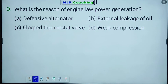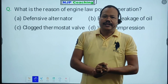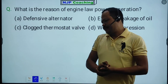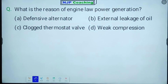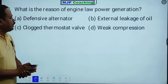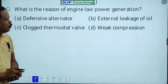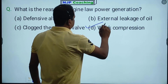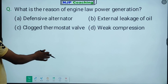Next question: what is the reason for engine low power generation? The options are defective alternator, external leakage of oil, closed thermostat valve, and weak compression. The right answer is D, weak compression. This is the last question of today's class.